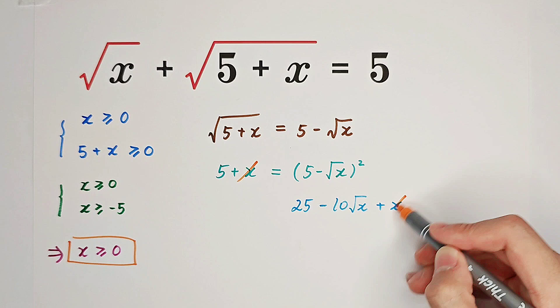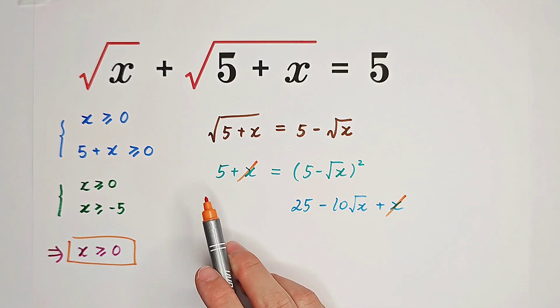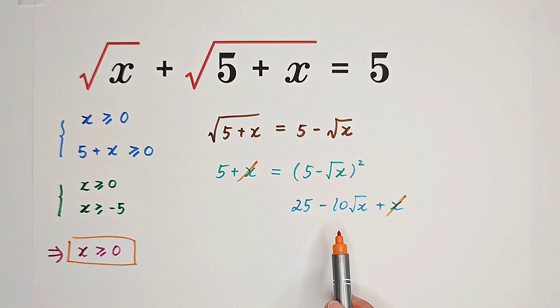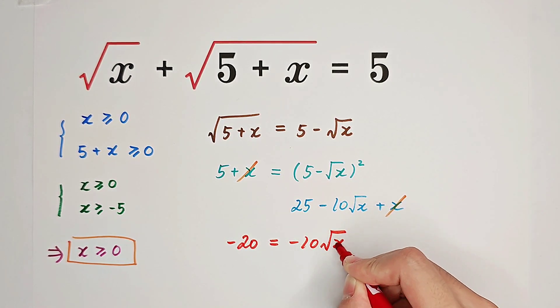Now we see plus x appears on both sides, so we can cancel it. 5 equals 25 minus 10 times square root of x. If we subtract 25 from both sides, then negative 20 equals negative 10 times square root of x.